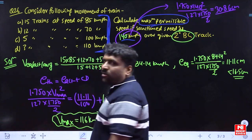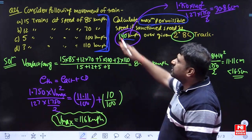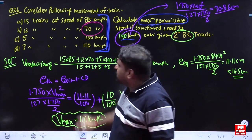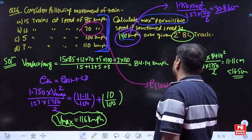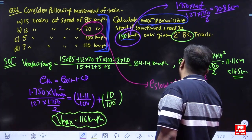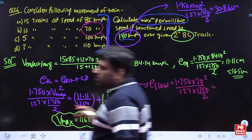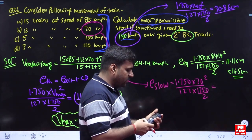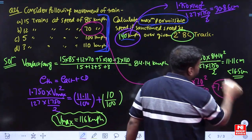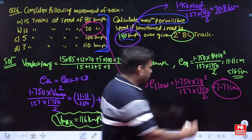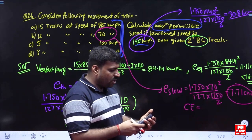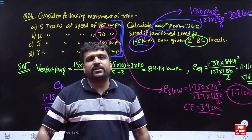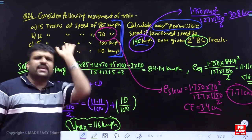One more thing: can you tell me what is the slowest moving train here? The slowest moving train is 70 kmph. Ask what is its demand: 1.750 × 70² / (127 × 875). The demand is 7.71 centimeters, and what you have provided is 11.11 centimeters. So the excess this train is facing is 11.11 − 7.71 = 3.4 centimeters, which is completely permissible. This train can move easily over this particular track.